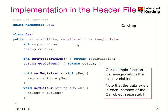Now let's implement it. Here we implement it in the header file, so we need to make changes only for the methods, because the methods now need to be implemented — we define them with their body and the code that needs to be provided. For get registration, we return the registration number. For get color, we return the color.